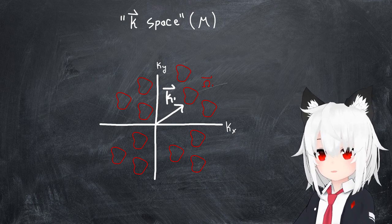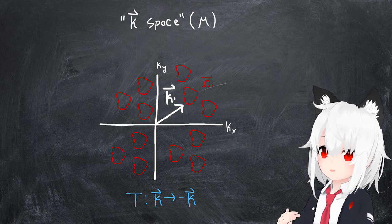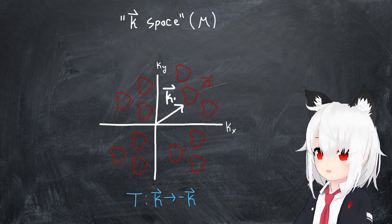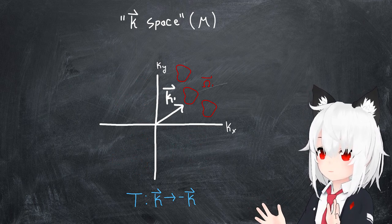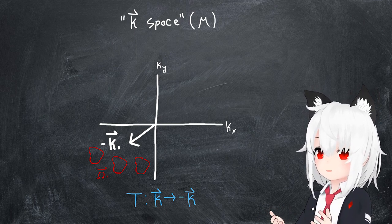So how can we do this? Well, one way would be to consider transformations which take the momentum vector to minus itself. This would be particularly useful because it would end up relating effects on one side of momentum space to the other, allowing us to make very general statements about the nature of Berry curvature.